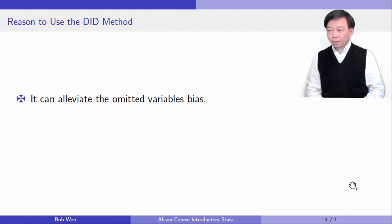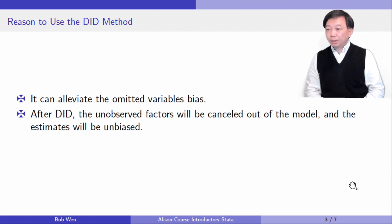Why do we employ the difference in differences method? Because it can alleviate the omitted variable bias. Suppose there were unobserved factors that influence the outcome variable. We could not include the unobserved or unmeasured factors in the model, and therefore it could result in omitted variable bias. After difference in differences, the unobserved factors will be cancelled out of the model, and the estimates will be unbiased. In other words, the estimate is the pure treatment effect, which can better explain whether the treatment works and makes a difference.